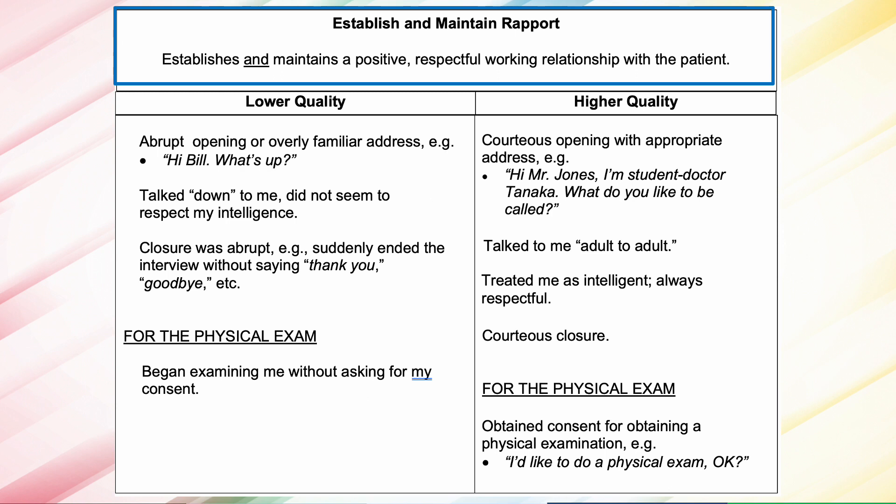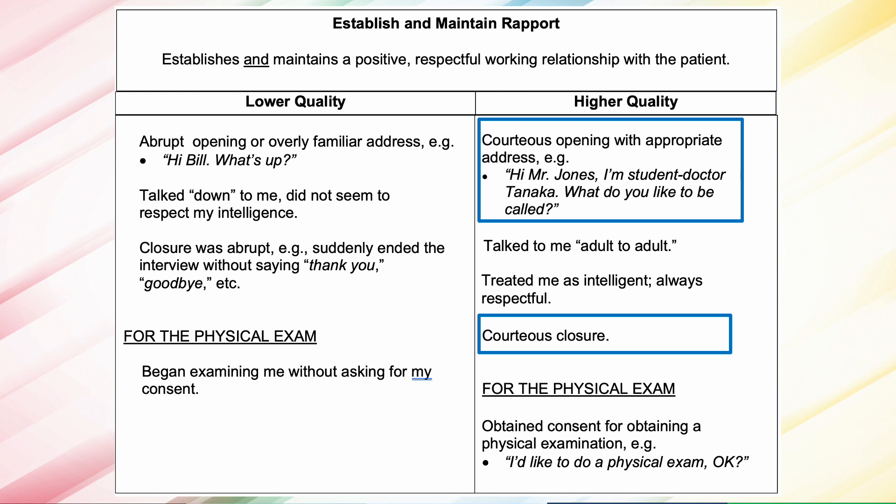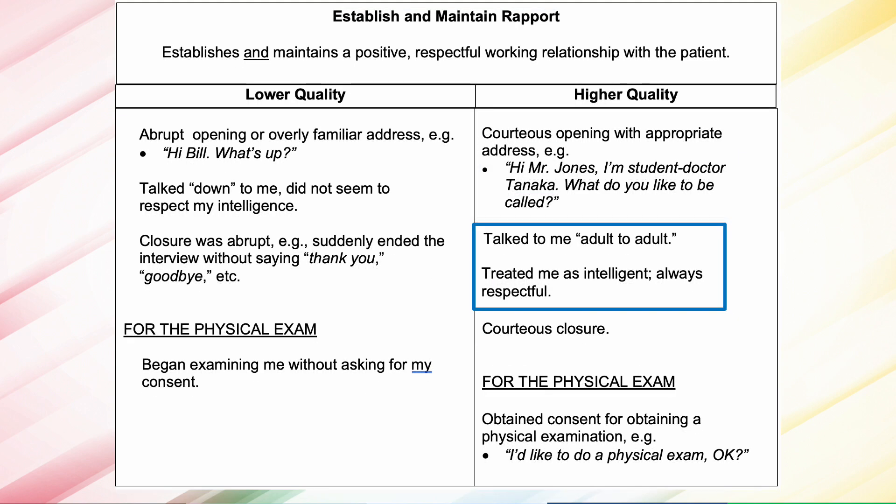Establish and maintain rapport is defined as establishing and maintaining a positive, respectful working relationship with the patient. In this tutorial, I'll focus on the higher quality behaviors — the lower quality behaviors are usually the opposite. First, look for whether the learner made a courteous opening and also a courteous closure. Did they talk to you adult to adult and treat you as intelligent and always respectful in their interactions with you?